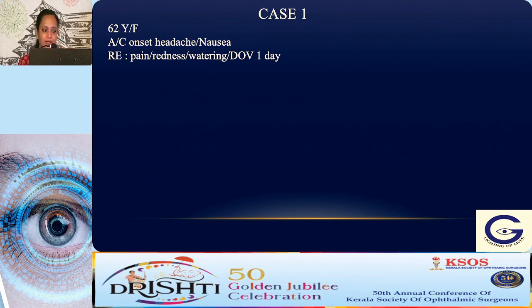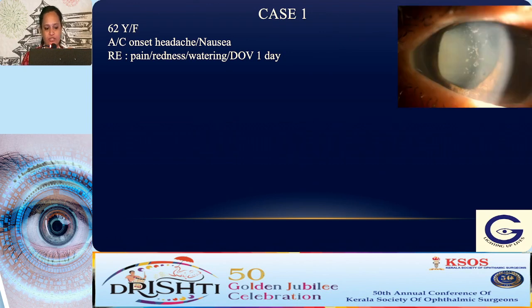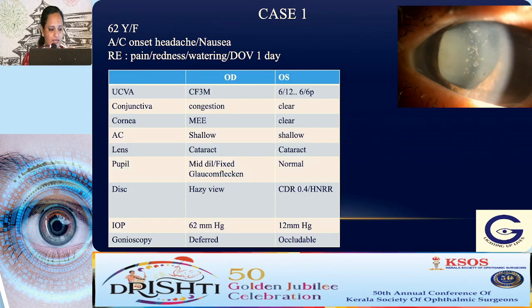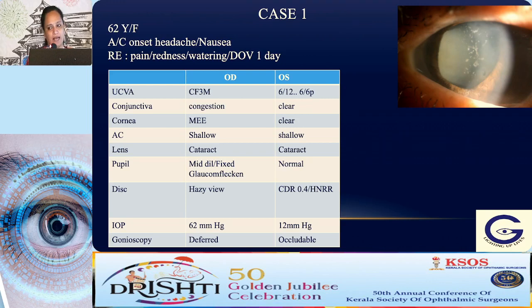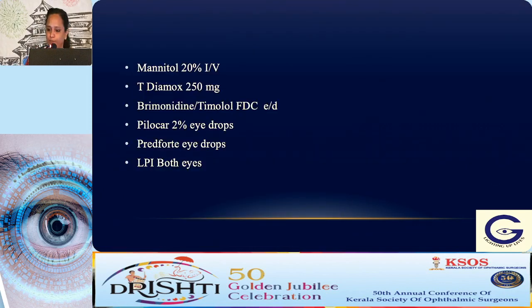Case 1: A 64-year-old female presented with acute onset headache, nausea, right eye pain, redness, watering, and diminution of vision for one day. On examination, uncorrected visual acuity was counting fingers at 3 meters, with conjunctival congestion, epithelial edema, shallow AC, cataractous lens, mid-dilated fixed pupil with glaucomflecken, and hazy disc view. IOP was 62 mmHg. Gonioscopy was deferred in that eye but the fellow eye showed occludable angles. Diagnosis: acute primary angle closure glaucoma due to pupillary block.